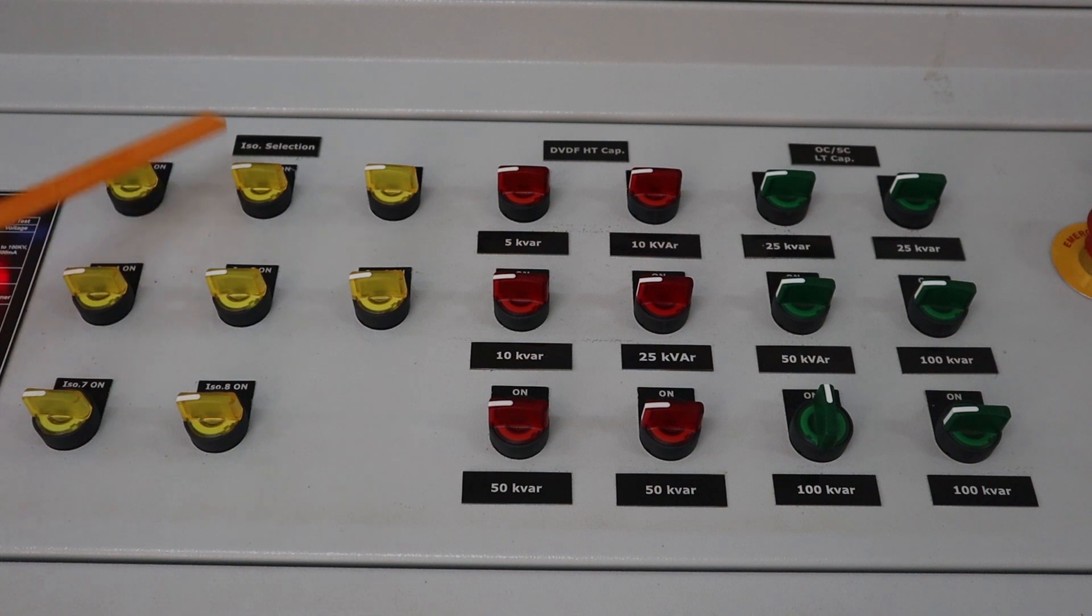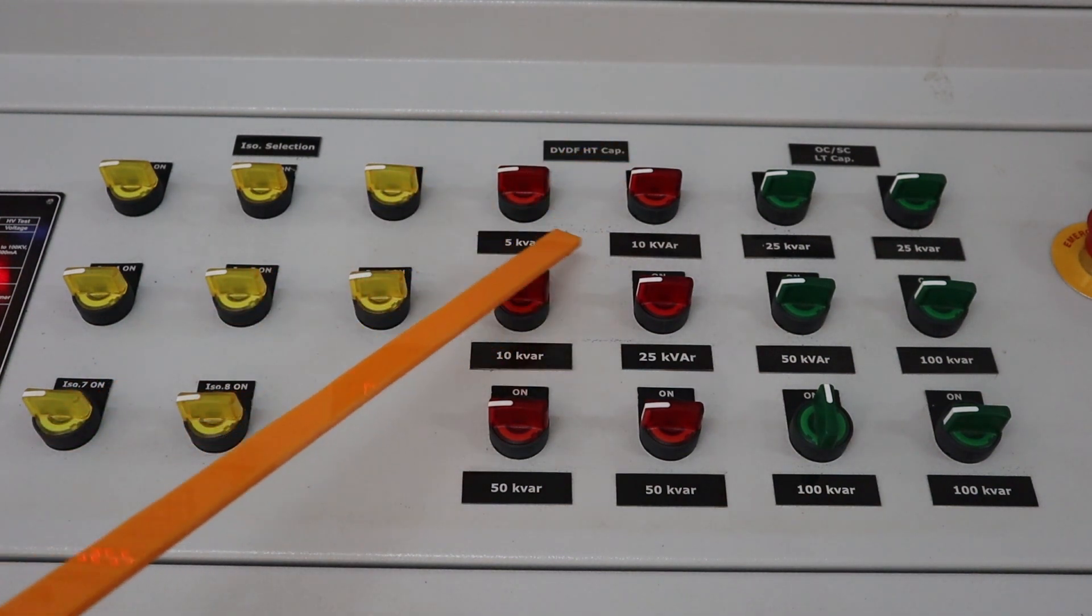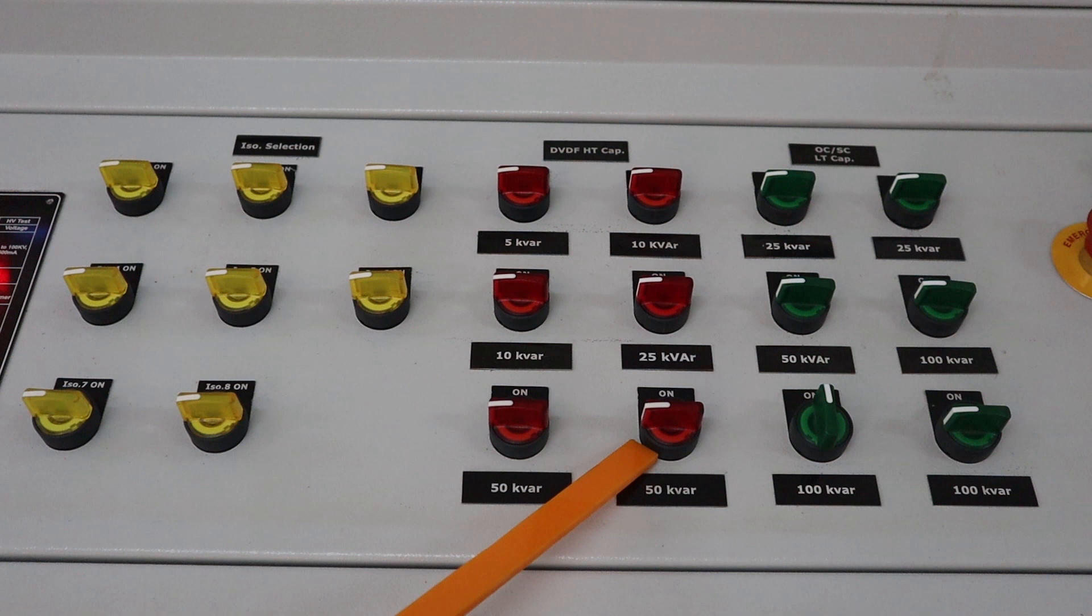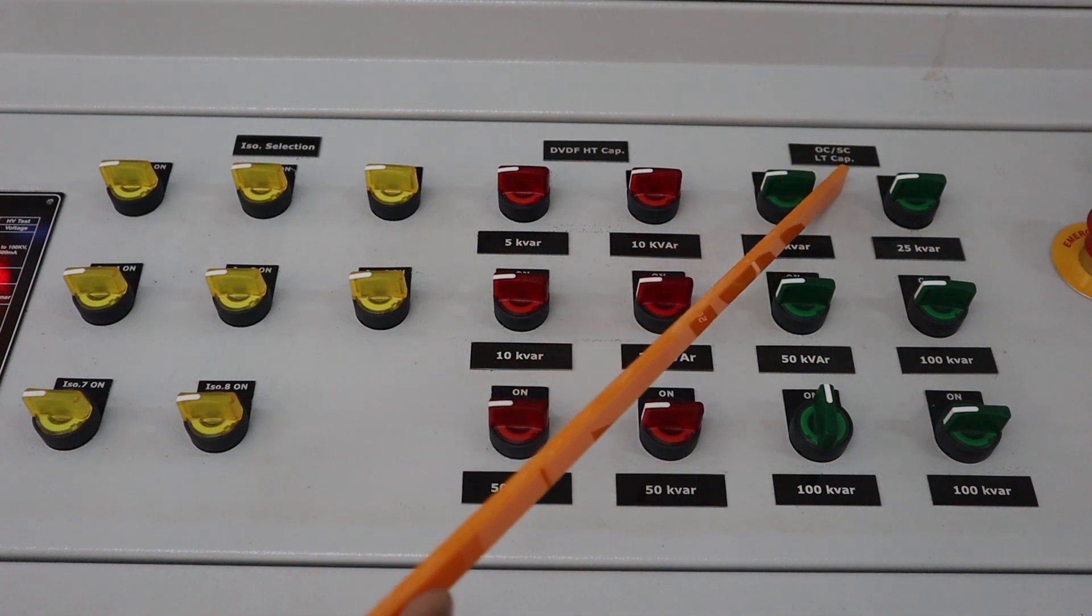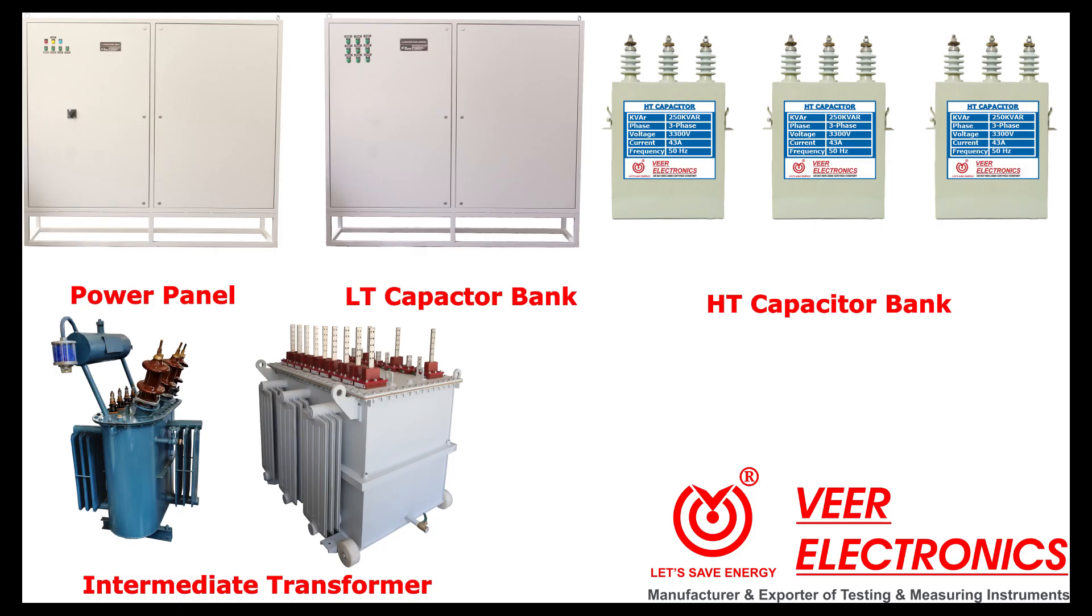This is isolator on off switch for HT capacitor bank with yellow indication lamp. This is KVAR capacitor selector lamp. This is KVAR capacitor selection switch for DBDF test with red indication lamp. This is LT capacitor selection switch for short circuit test with green indication lamp.